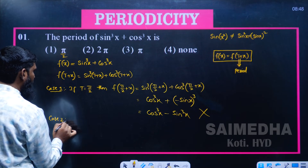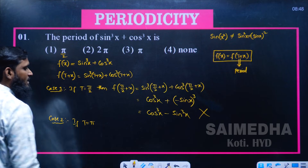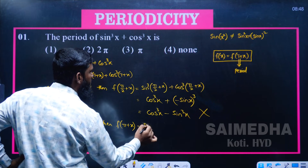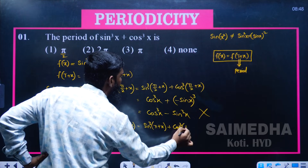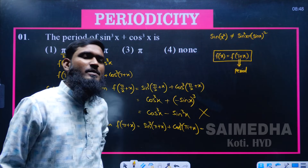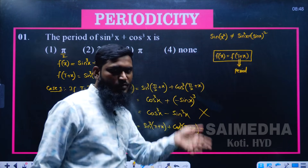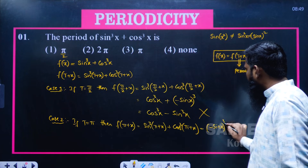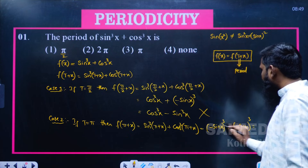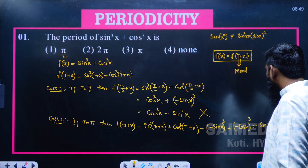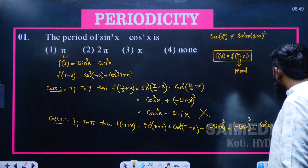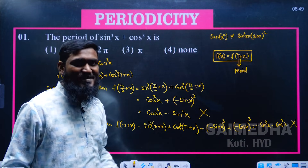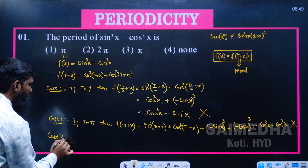Case 2: t = π. Then f(π + x) = sin³(π + x) + cos³(π + x). Since (180 + θ) is the third quadrant, both sine and cosine are negative with no function change: sin(π + x) = −sin x and cos(π + x) = −cos x. So we get (−sin x)³ + (−cos x)³ = −sin³x − cos³x. This does not equal sin³x + cos³x, so the condition is not satisfied. Case 2 fails.